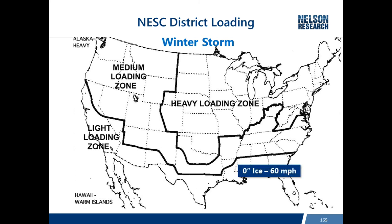Light loading starts with zero ice and a 60 mile-per-hour wind — which is why the loading in the light district might be greater than in the medium district. Heavy loading has a half inch of radial ice, which adds an inch to the diameter of the wires, and then applies a 40 mile-per-hour wind.